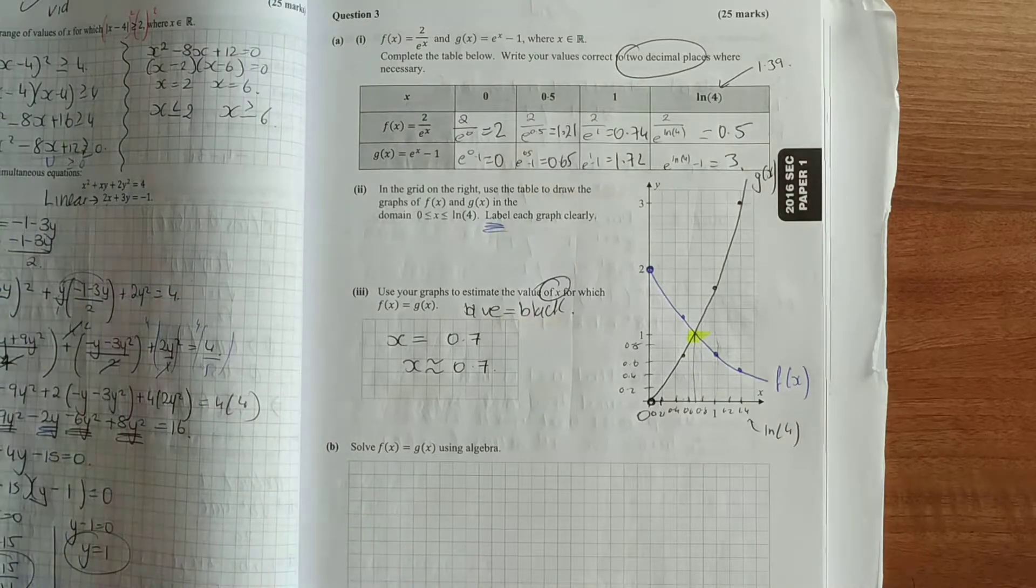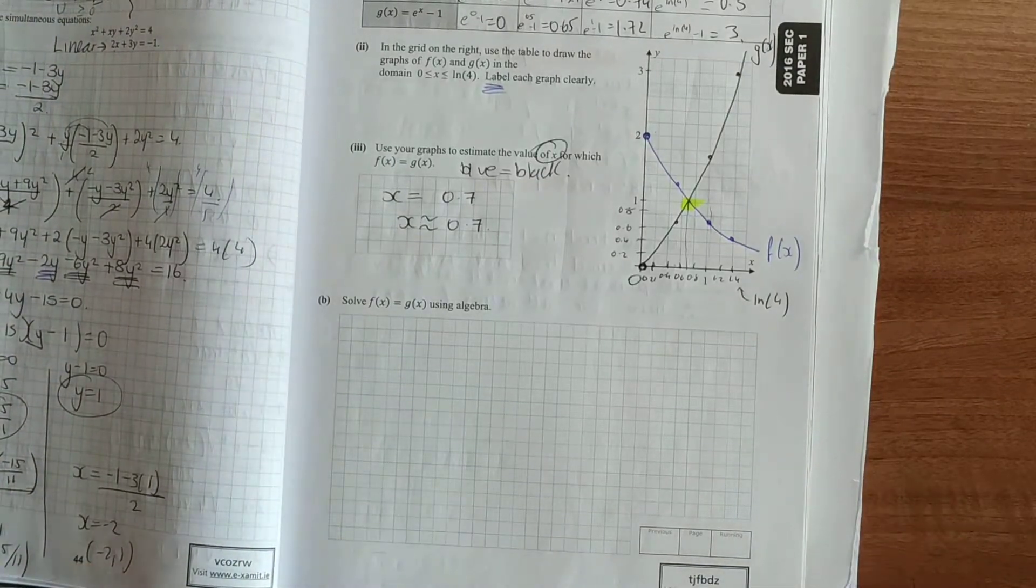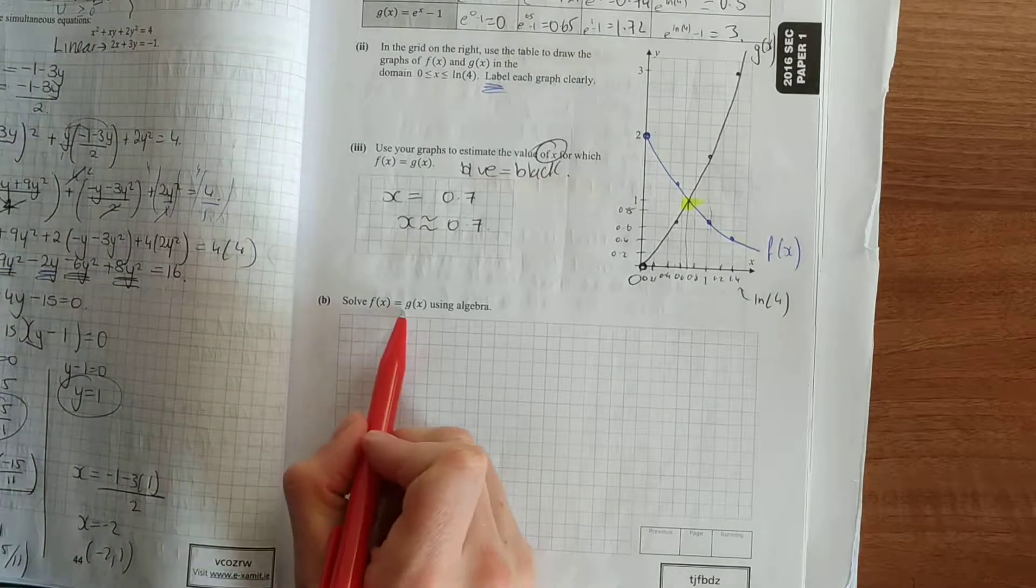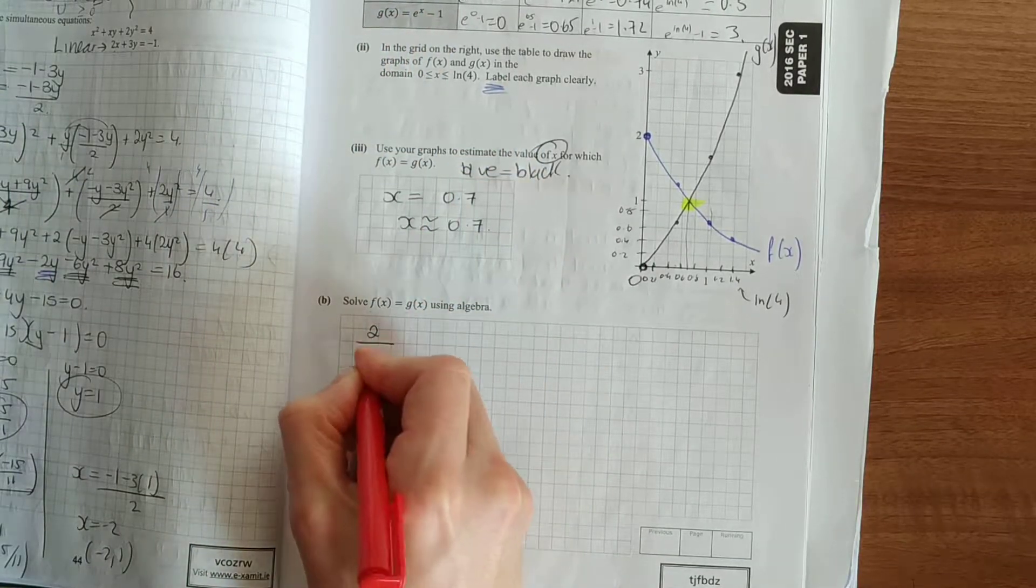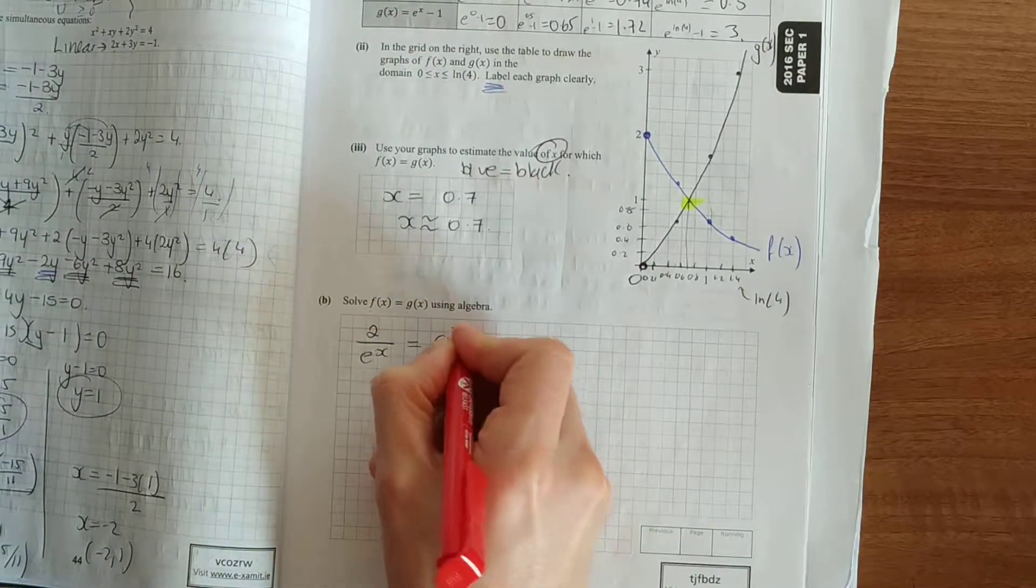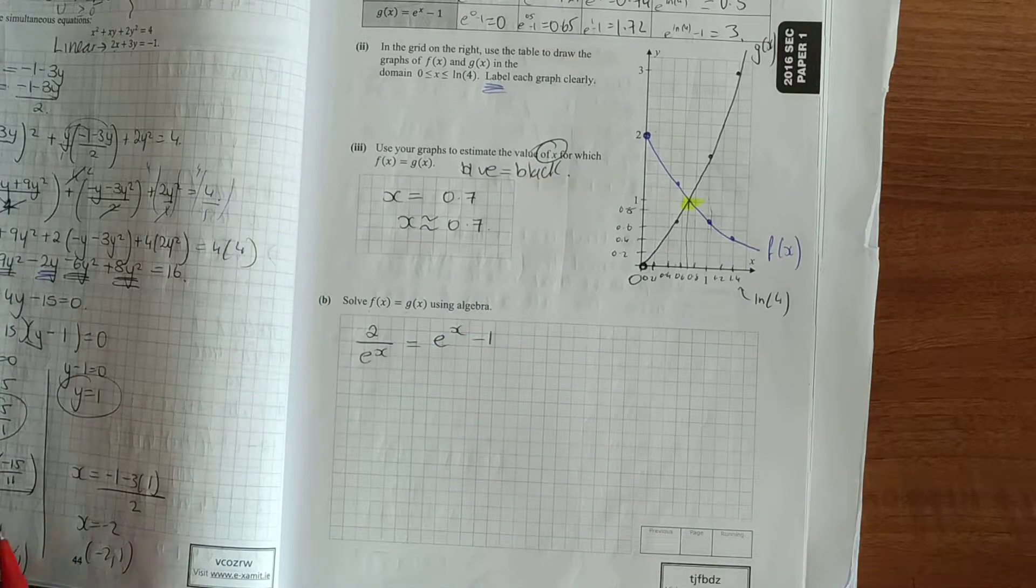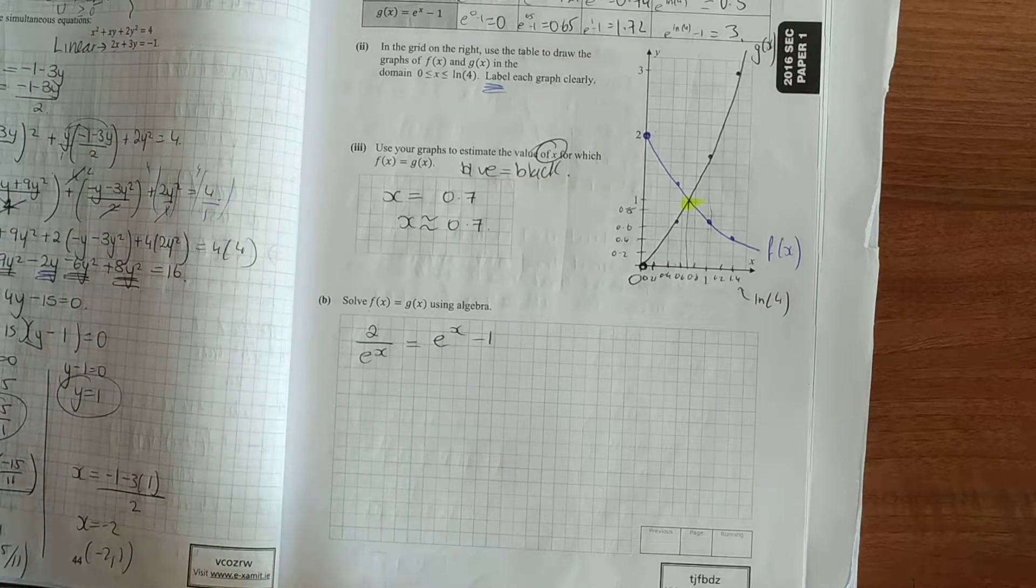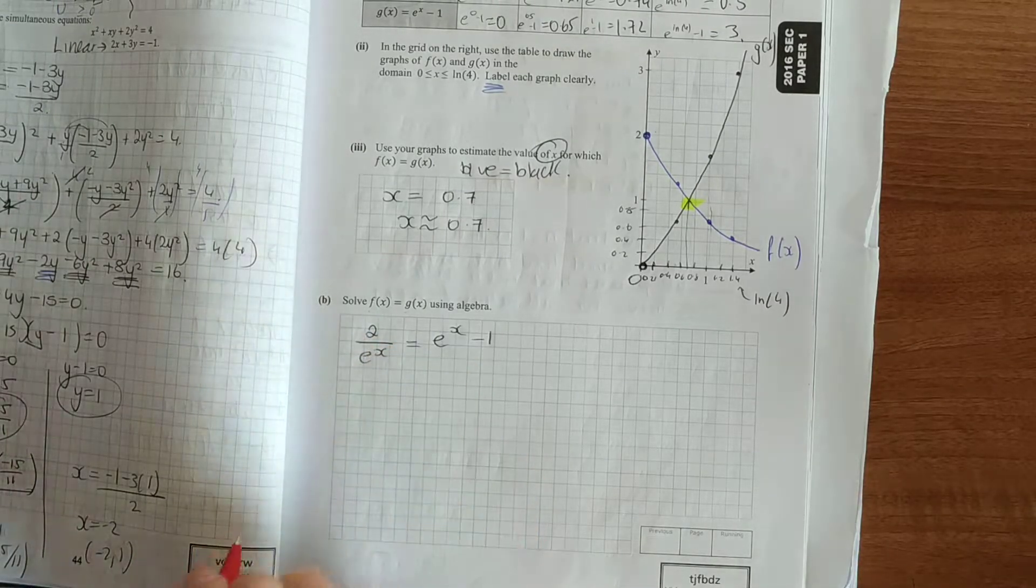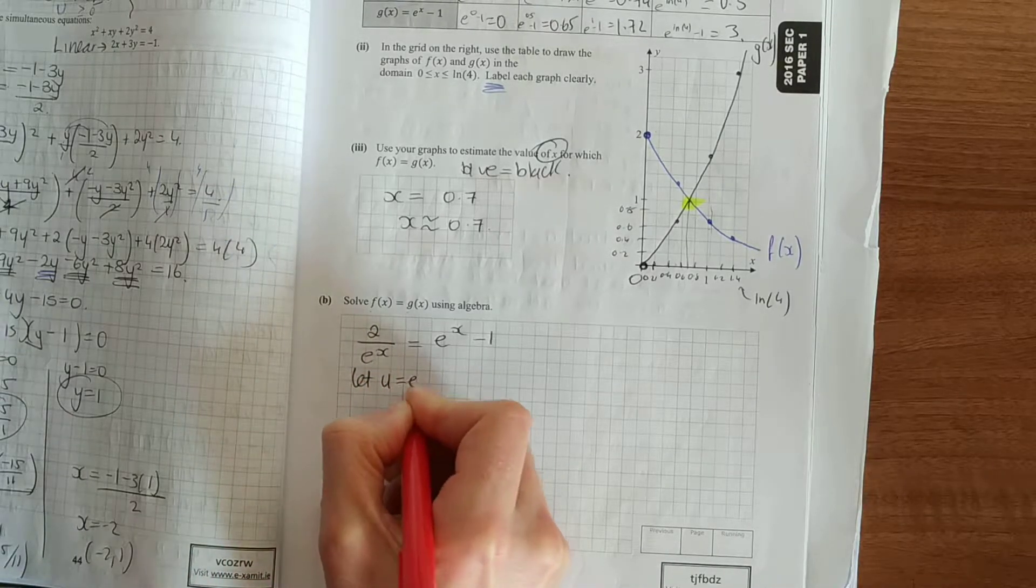Now, this is the bit where we're going to get the actual answer by solving it using algebra. So solve f of x equal to g of x using algebra. f of x is 2 over e to the x is equal to g of x, e to the power of x minus 1. I've seen a student once doing it, which is very clever. They made this equation easier by making a substitution, which you would have learnt about in your algebra checklist.